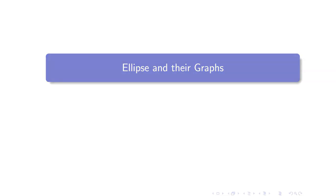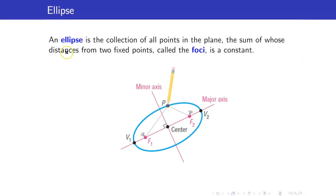In this lesson we are going to study ellipses and their graphs. An ellipse is the collection of all points on the plane the sum of whose distances from two fixed points, called the foci, is a constant. So this means that if you get a point P on your ellipse and you get the distance from the first focus and add it to the distance from the second focus, this sum has to always be constant.